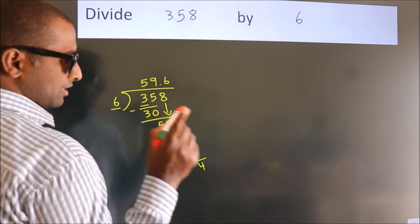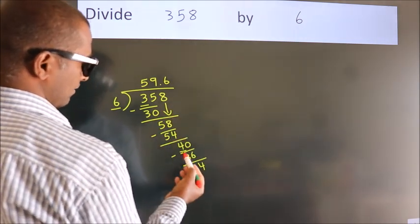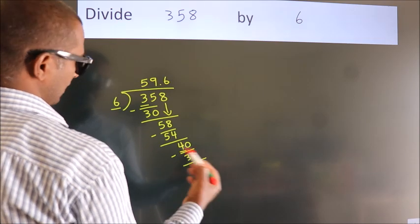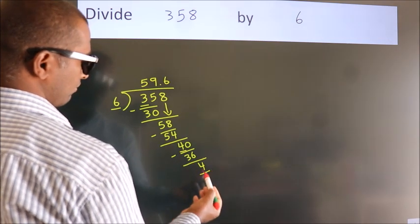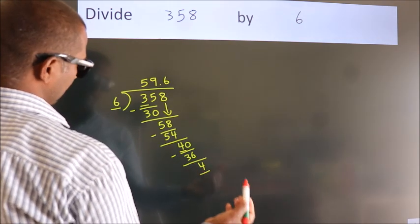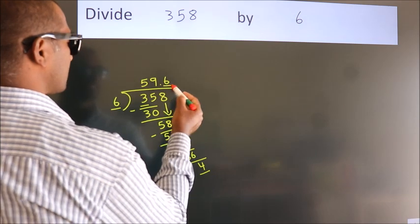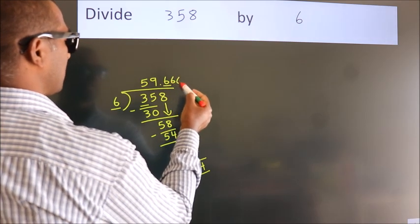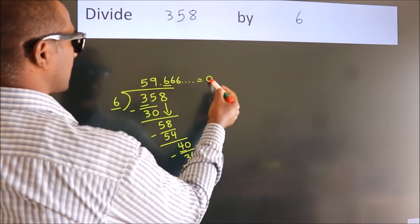Now you observe: we had 4 here and we got 4 again. That means this number keeps on repeating. So this is our quotient.